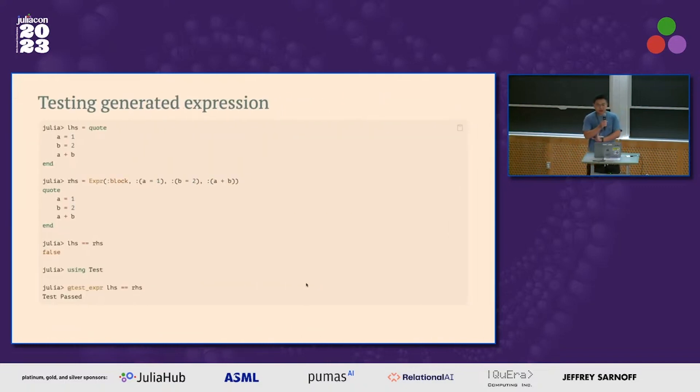And the other tool I would like to highlight is the testing utilities for metaprogramming. So one thing we found very inconvenient is when you test a metaprogram, generate expressions, there are a lot of redundant like line numbers that you don't really care. But when you actually just use the equality relationship of the default expression, they return false, which makes sense. They're not exactly equal.